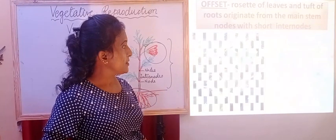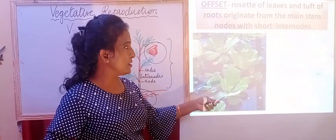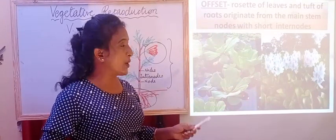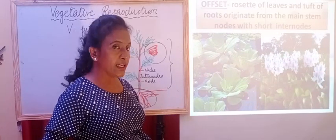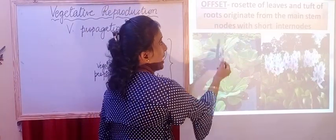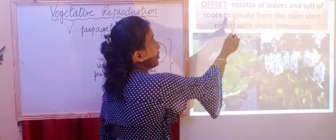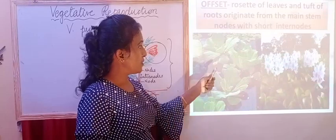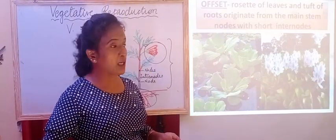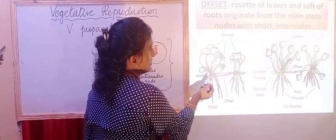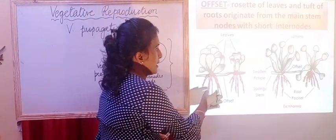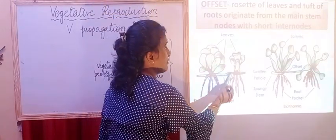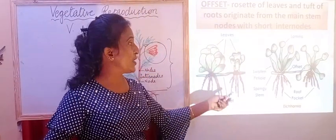Next is offset. We see such kind of propagation in Pistia and Eichhornia or water hyacinth. These are aquatic plants which grow in ponds or lakes in stagnant water. It has a rosette of leaves — named rosette because they look like rose — and a tuft of roots present below. Here the offset has a short internode, and at several points there are nodes which give rise to leaves as well as roots.